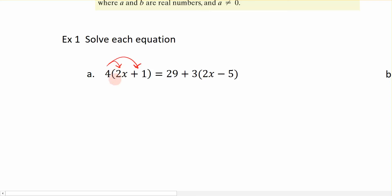So when I distribute or multiply into the parentheses here, 4 times 2x is 8x plus 4 times 1, which would be 4, equals, bring my 29 down, and let's do the same thing here. Distribute this 3 so that I can remove the parentheses here. I would get 3 times 2x is 6x, and 3 times that would be negative 15.